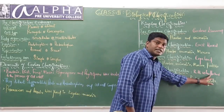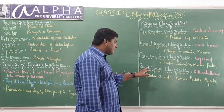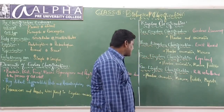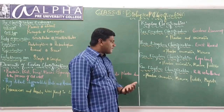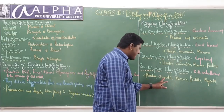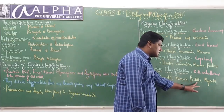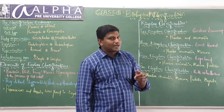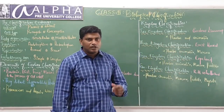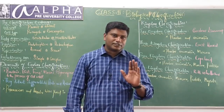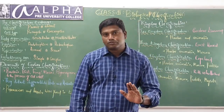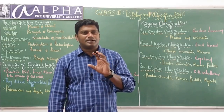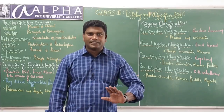R.H. Whittaker proposed the five kingdom system of classification, which is the worldwide accepted classification. He classified all living organisms into five kingdoms: Kingdom Plantae, Animalia, Monera, Protista, and Mycota. Mycota is what some textbooks refer to as Fungi — you can use either Mycota or Fungi, as Mycota includes fungi.